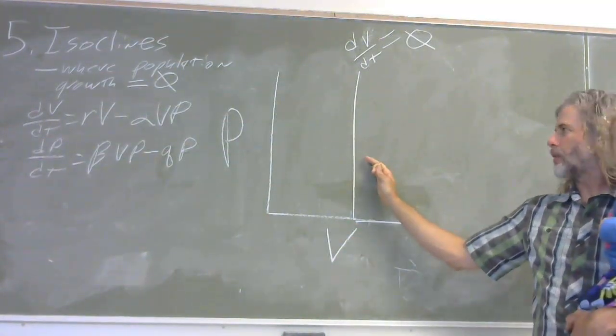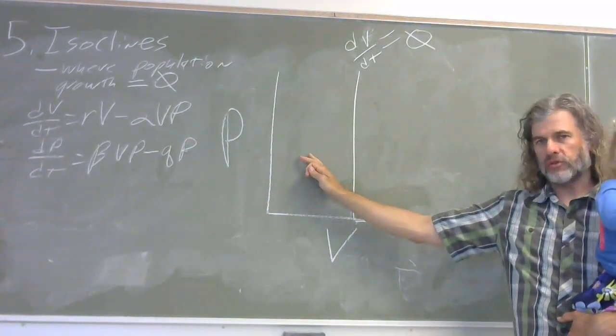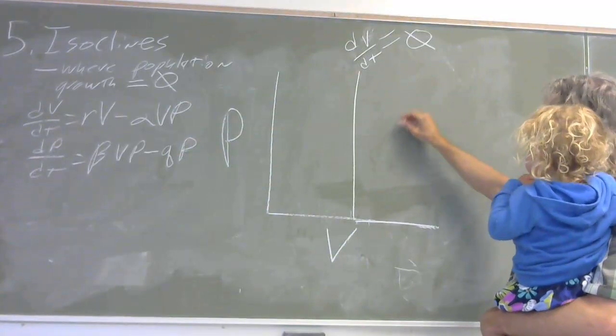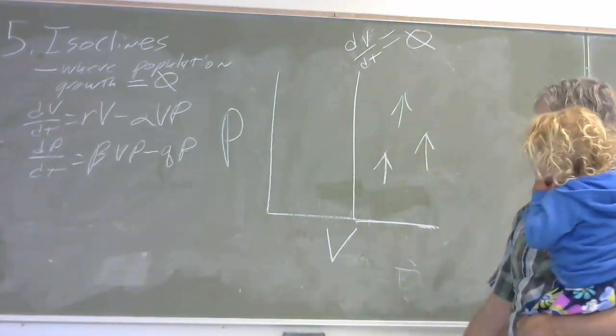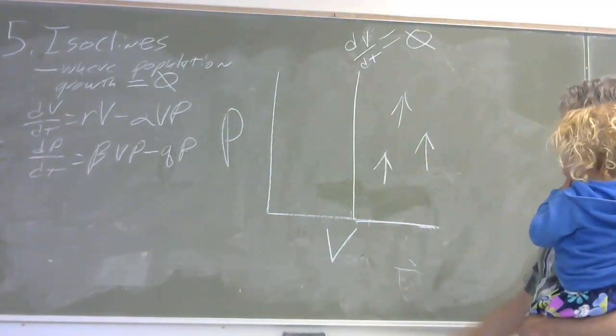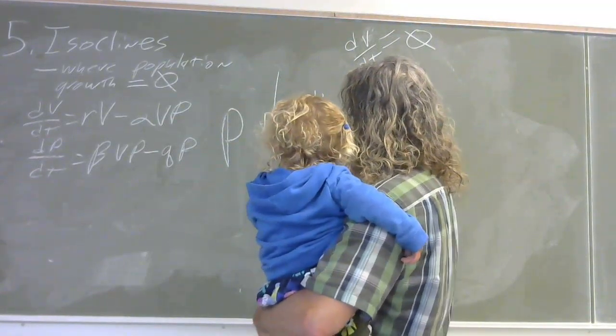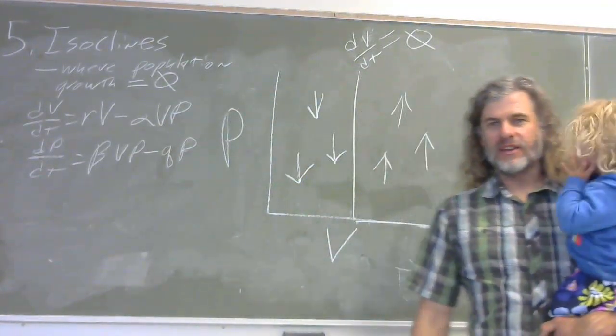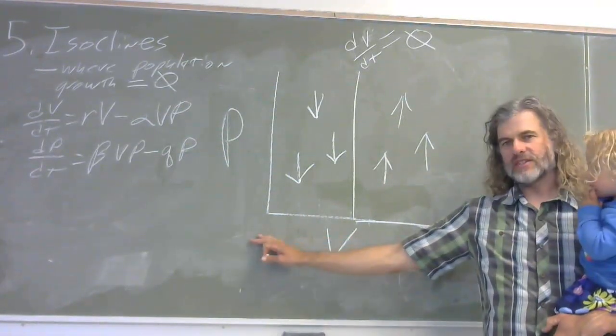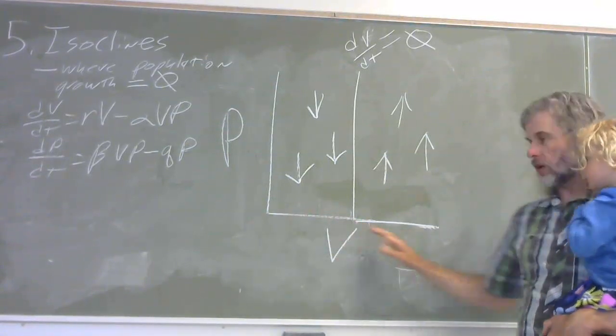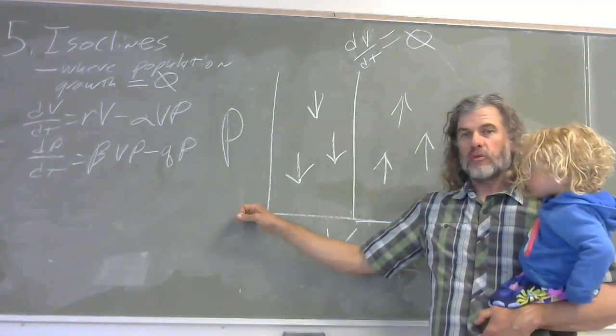Above this, the isocline is zero population growth. Above it, the population growth is positive, and below it, the population growth is negative. So let's just draw some arrows on here to show us how things are changing. Of course, I made a mistake here. I'll point it out in just a second. I have drawn the isocline not for victims,